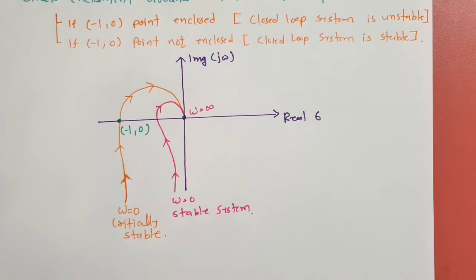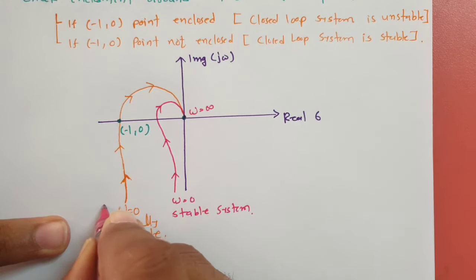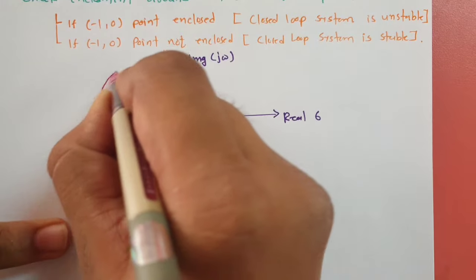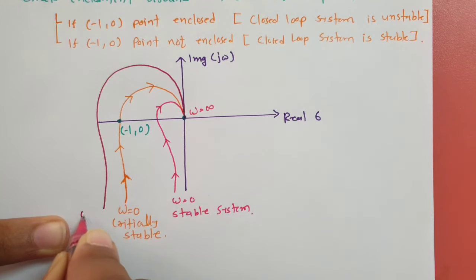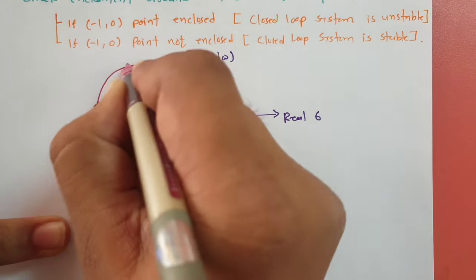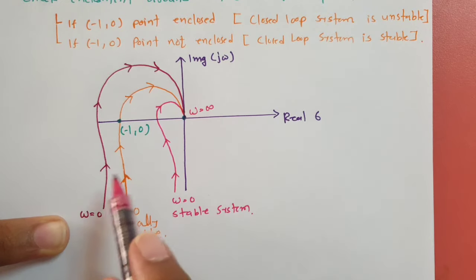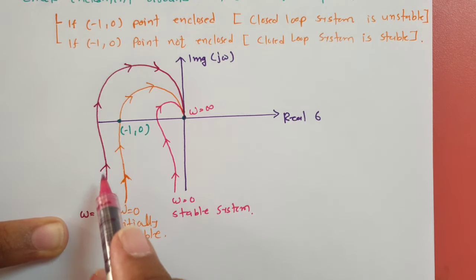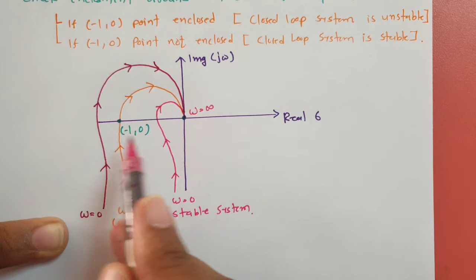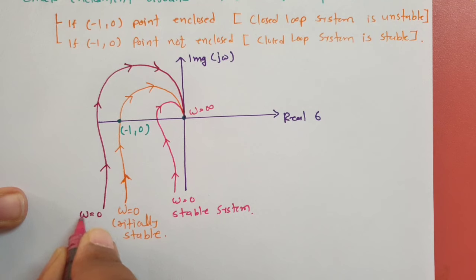In the third case, where the system is unstable, the polar diagram moves from omega equals 0 to omega equals infinite in such a way that the minus 1 comma 0 critical point is enclosed on the right side of the path. This means the closed-loop system for this polar diagram is unstable.